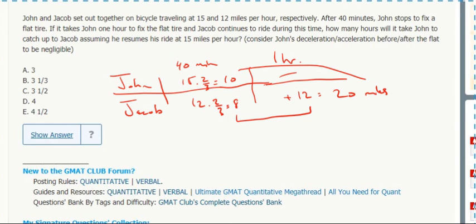So, now John needs to catch up 10 miles. He's 10 miles behind at this point. He needs to catch up 10, and he catches up at 3 miles an hour, because Jacob's still going 12 miles an hour, but John's going 15, so he's catching up at 3 miles an hour. So, that's 3 and a third.